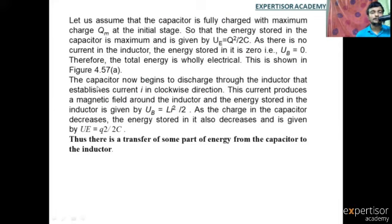The capacitor now begins to discharge through the inductor, establishing a current I in the clockwise direction. This current produces a magnetic field around the inductor, and the energy stored in the inductor is given by UB = L i squared by 2. As the charge in the capacitor decreases, the energy stored in it also decreases, given by Ue = Q squared by 2C.